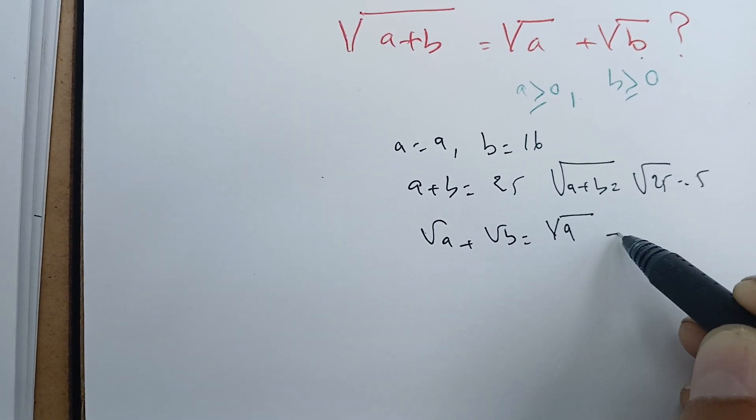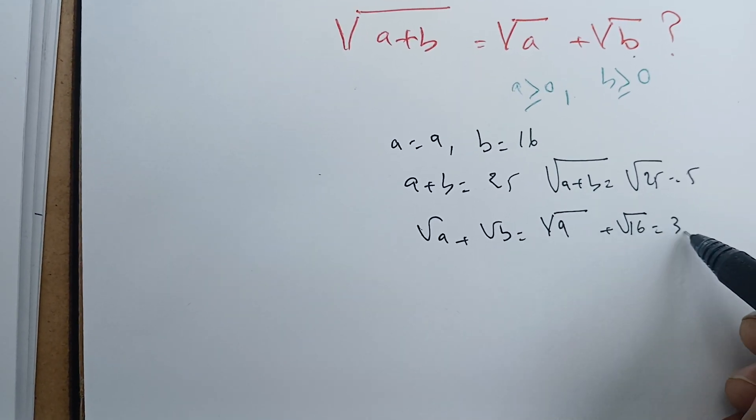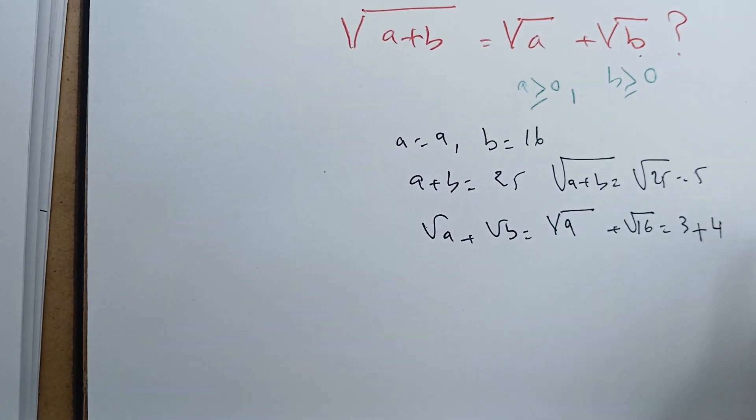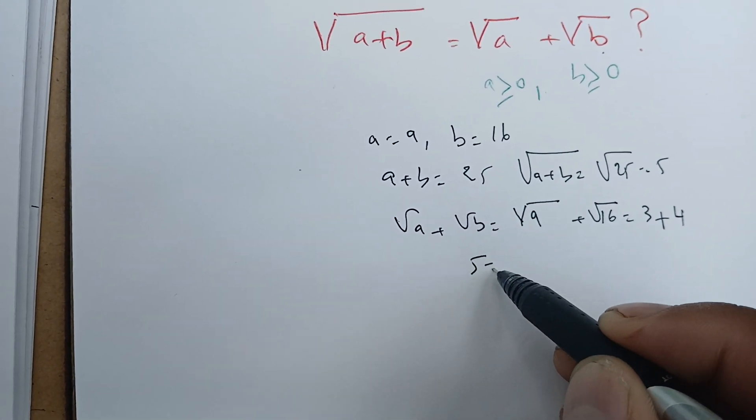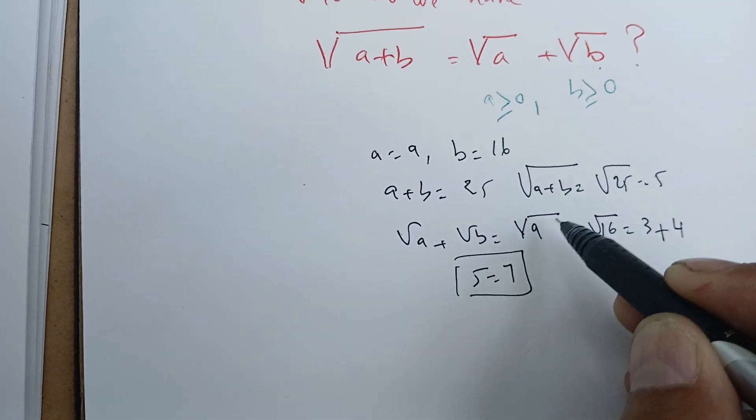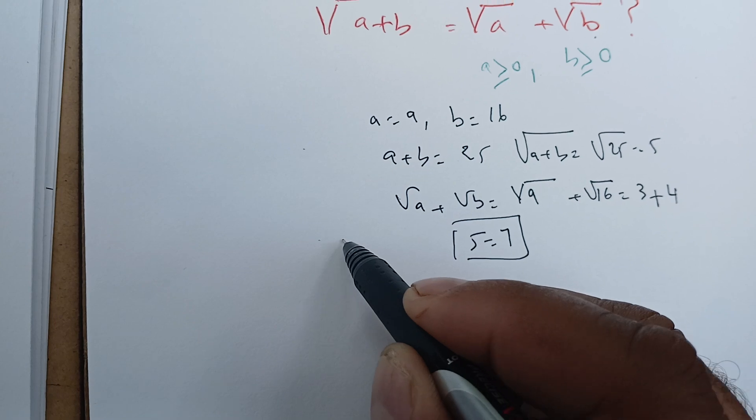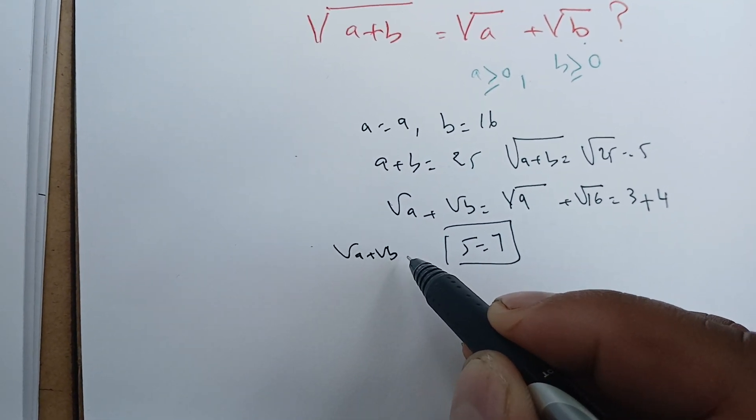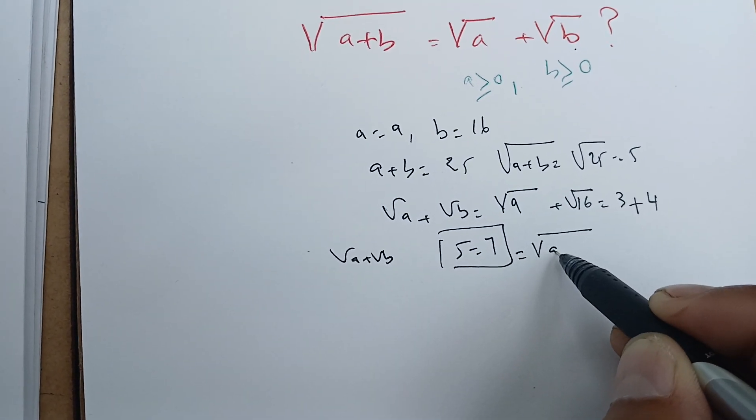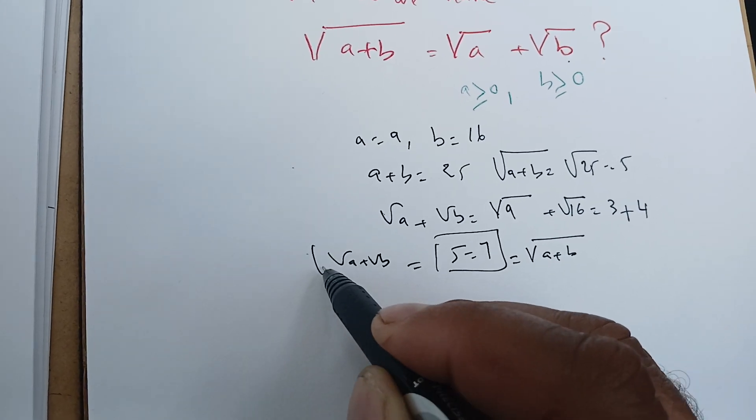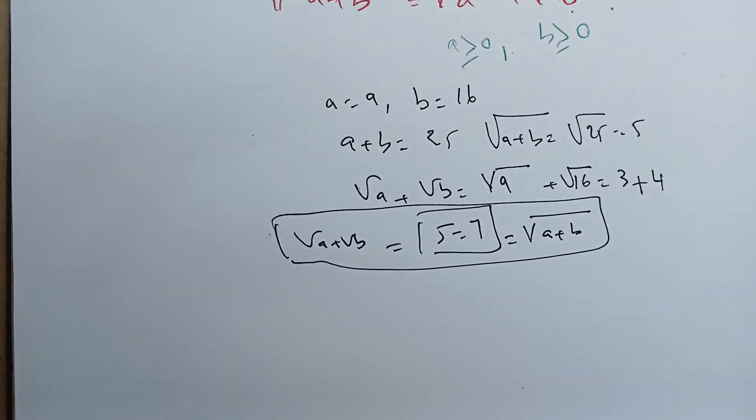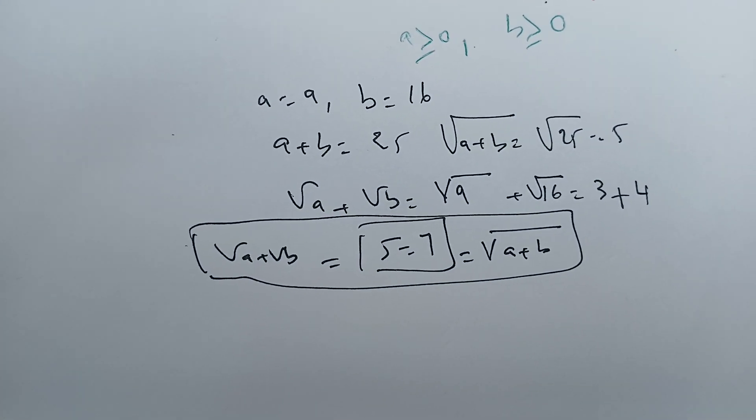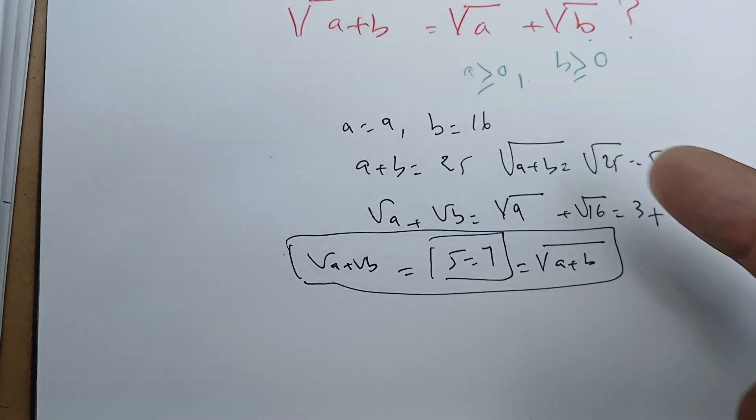Which is 3 plus 4. So that means 5 equals 7. If the square root of a plus square root of b equals square root of a plus b, we should have this one true. But this is not true, that means this is false.